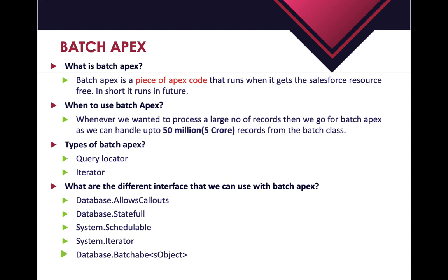The second example is an e-commerce site like Amazon, where every minute many users are placing orders and getting notified about their order status. In that case, you can write a Batch Apex to fetch all those records whose order status is not completed and send emails to the customers in bulk. There might be thousands or even millions of customers placing orders in a single day.